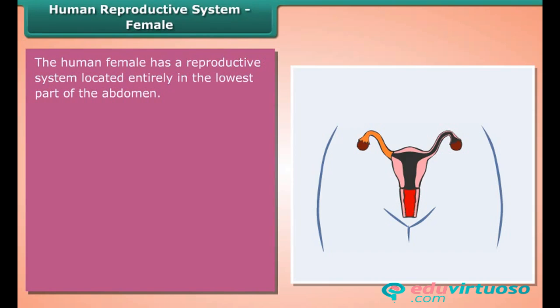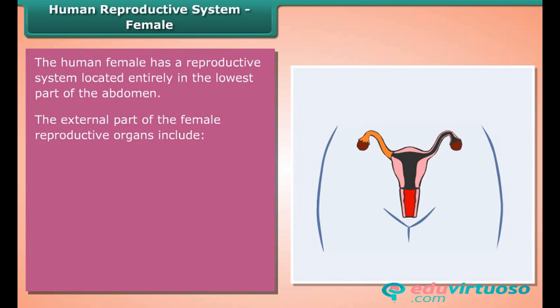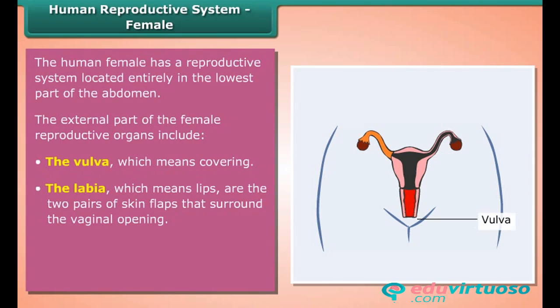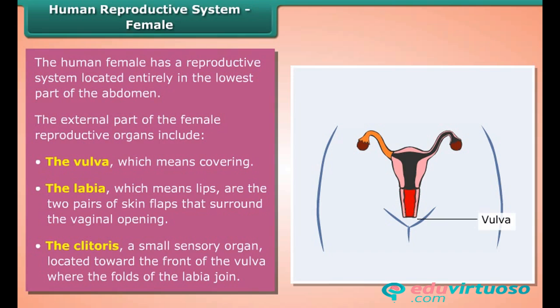The human female has a reproductive system located entirely in the lowest part of the abdomen. The external part of the female reproductive organs includes the vulva, which means 'covering.' The labia, which means 'lips,' are the two pairs of skin flaps that surround the vaginal opening. The clitoris is a small sensory organ located toward the front of the vulva where the folds of the labia join.